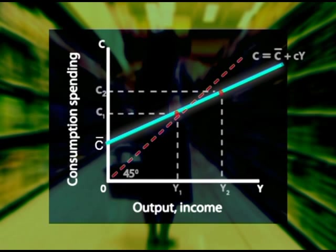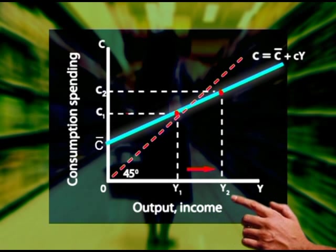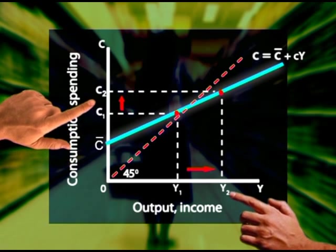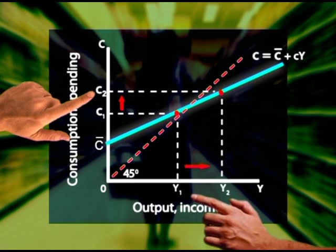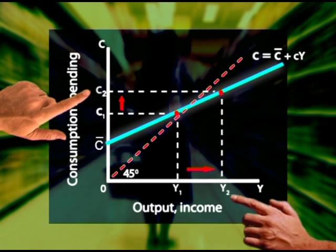An increase in income, for instance, from Y1 to Y2, indicates that consumption spending increases from C1 to C2. But because the marginal propensity to consume is less than 1, the increase in consumption spending from C1 to C2 is smaller than the change from Y1 to Y2.